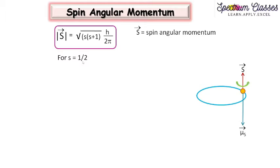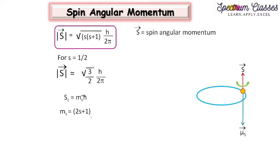Since the spin of an electron is plus or minus half, on putting the value of spin in this equation we get √(3)/2 · ℏ for the total spin angular momentum. Its component about the z-axis, Sz, is equal to ms·ℏ, where ms has values from +s to −s, meaning plus half and minus half. So ms has two values corresponding to the spin of the electron.